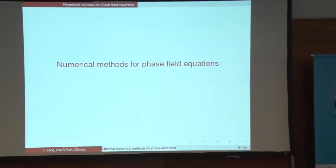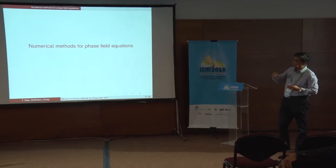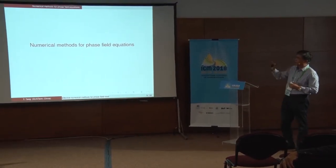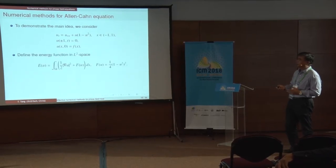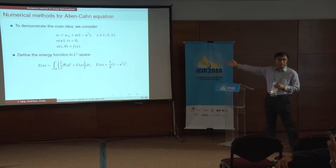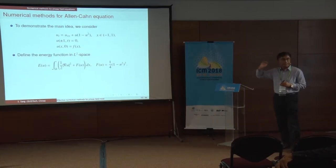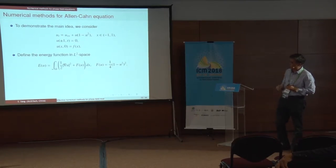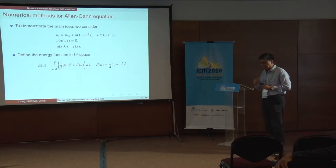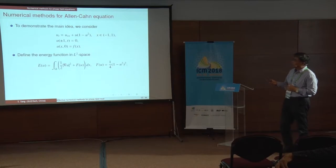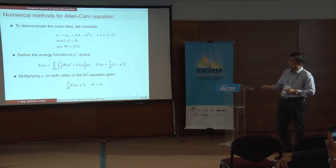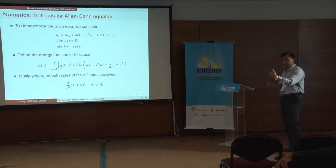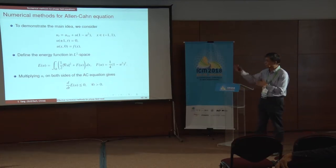Let me move to the second part: numerical methods for phase field equations. I'll start with a very simple equation. We have u_t = u_xx, the standard heat equation, plus the double-well potential derivative, which introduces a polynomial nonlinearity. If you multiply u_t on both sides and integrate by parts, you get the standard dissipation law for the Allen-Cahn equation: for positive time, energy is decreasing.